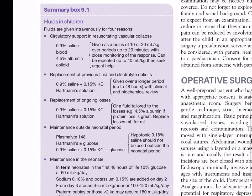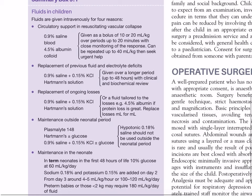Summary Box 9.1 — Fluids in children. Fluids are given intravenously for 4 reasons. First: circulatory support in resuscitating vascular collapse — 0.9% saline, blood, or 4.5% albumin colloid — given as a bolus of 10–20 ml/kg over up to 20 minutes with close monitoring; can be repeated up to 40 ml/kg, then seek urgent help. Second: replacement of previous fluid and electrolyte deficits — 0.9% saline plus 0.15% KCl or Hartmann's solution — given over up to 48 hours with clinical and biochemical review. Third: replacement of ongoing losses — 0.9% saline plus 0.15% KCl or Hartmann's solution, or a fluid tailored to the losses — replaced milliliter for milliliter.